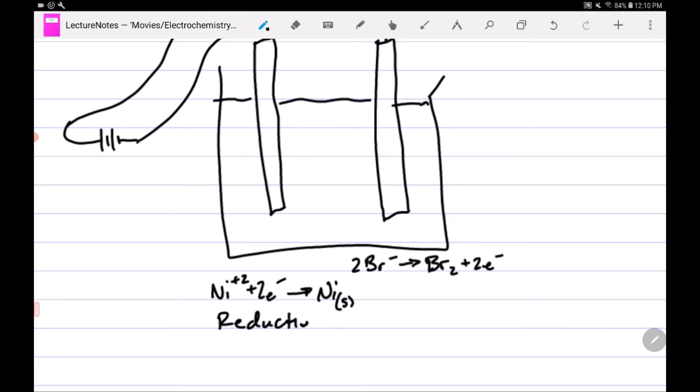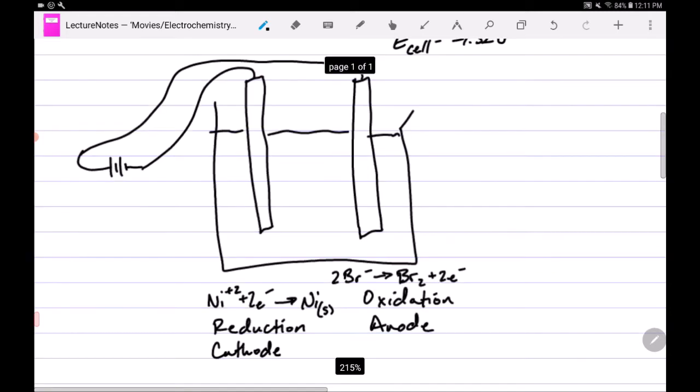This is still the reduction half-reaction, so this is still the cathode. And this is the oxidation half-reaction, so this is still the anode. And so what you would see is you would see nickel plating onto the electrode, or maybe just forming and falling to the bottom. And then your bromine would be forming over on this electrode.